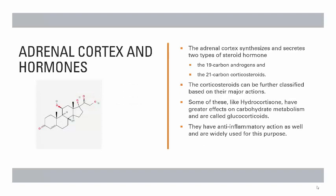The adrenal cortex synthesizes and secretes two types of steroid hormone: the 19-carbon androgens and the 21-carbon corticosteroids. Corticosteroids can be further classified based on their major actions. Some, like hydrocortisone, have greater effects on carbohydrate metabolism and are called glucocorticoids. These hormones have anti-inflammatory action and that is why they are used for this purpose quite widely.